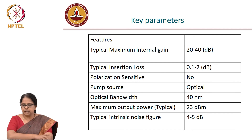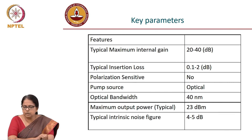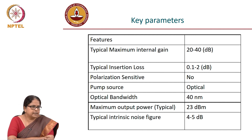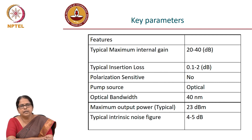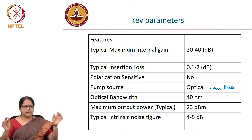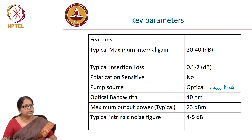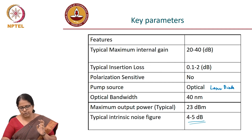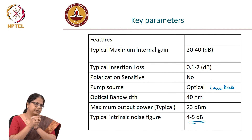The key EDFA specification numbers are: typical maximum gain is 20 to 40 dB depending on the EDFA. Insertion loss is about 2 dB, meaning an unpumped EDFA provides about 2 dB of loss. It is not polarization sensitive because amplification via stimulated emission retains all properties of the incident signal. The pump source is optical, typically a laser diode. The flat optical bandwidth is about 40 nanometers. Maximum output power is about 23 dBm and the typical noise figure is 4 to 5 dB. This concludes the physical layer description of the EDFA — next we will cover noise figure and signal to noise ratio.